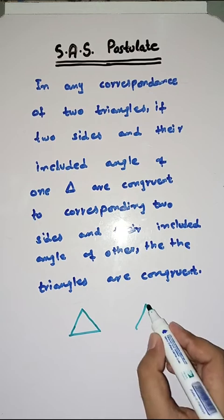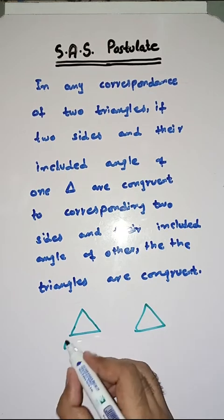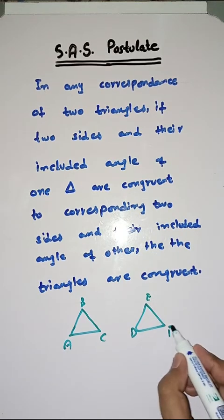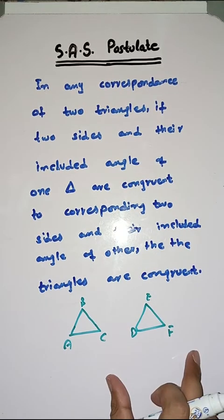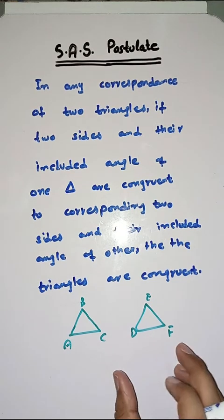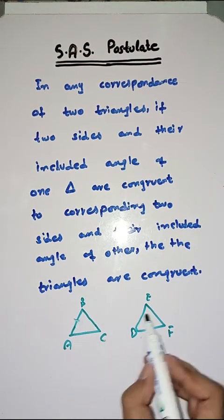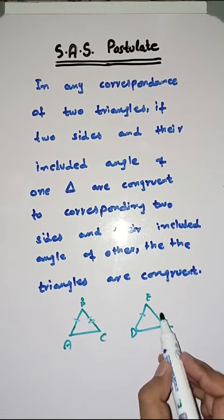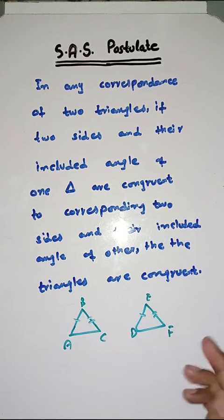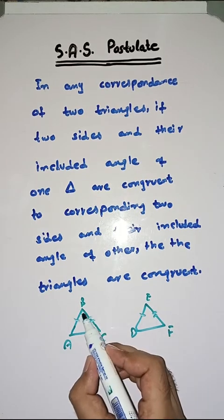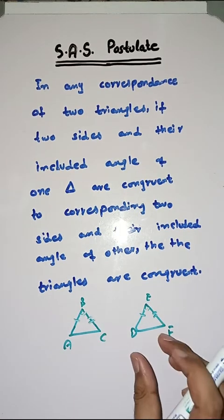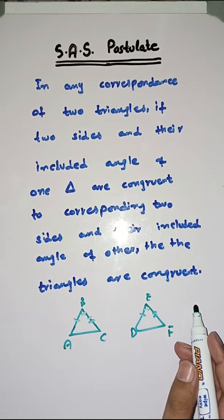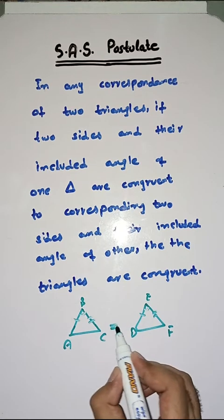Let's suppose we have two triangles: triangle ABC and triangle DEF. If two sides and the corresponding included angles are congruent — for example, sides AB, BC and sides DE, EF are congruent — then the triangles are also congruent.